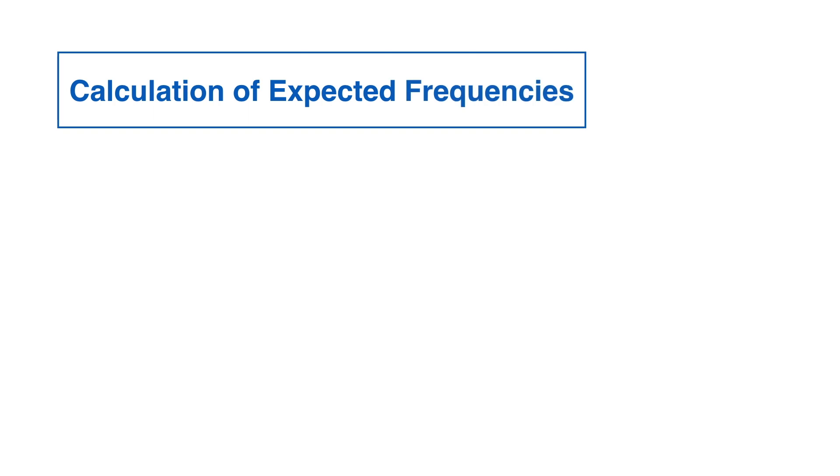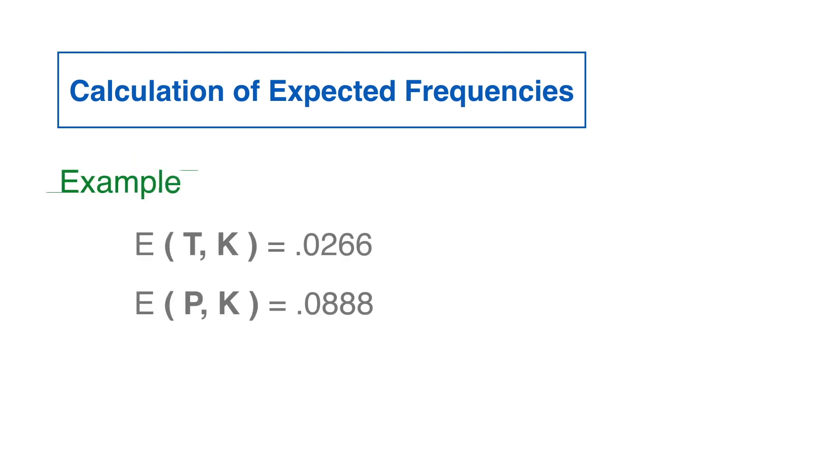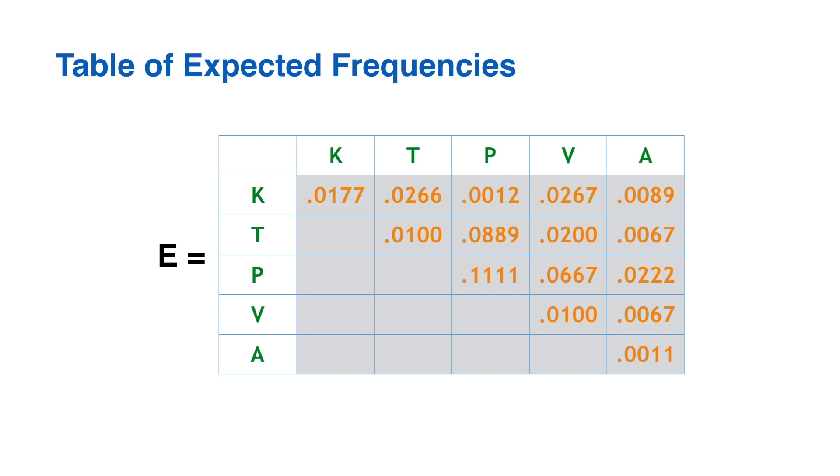The final step is a calculation of the expected frequencies, which result almost directly from the expected probabilities. This matrix summarizes the expected frequencies of the pairs in the block under study.